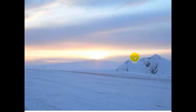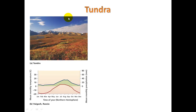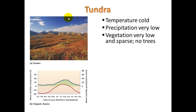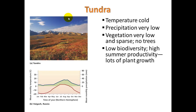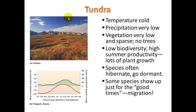Let's take a look at tundra — here's what it would look like at the poles, farthest from the equator. Some characteristics: it's cold, it's dry, vegetation is very low and sparse, there are no trees. It's low biodiversity, but you do have high summer productivity — lots of plant growth — because in the summer you have a lot of sun. Species often hibernate or go dormant in the wintertime, or migrate in just for the good times. This is the Arctic region.